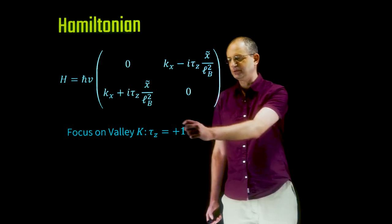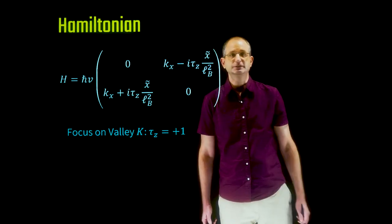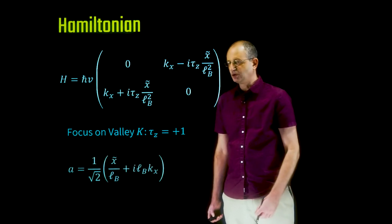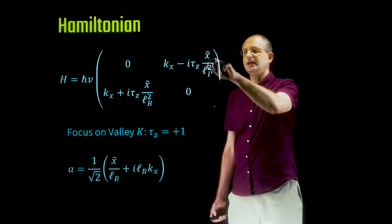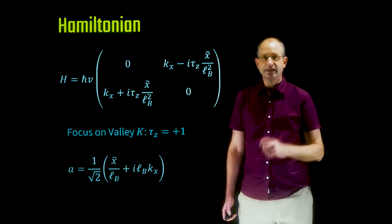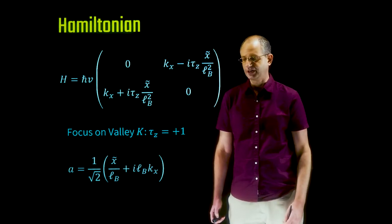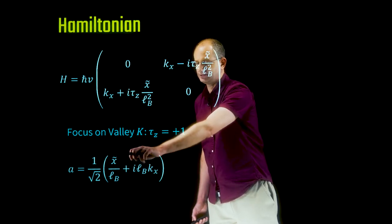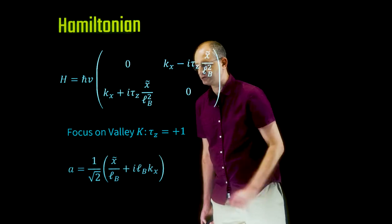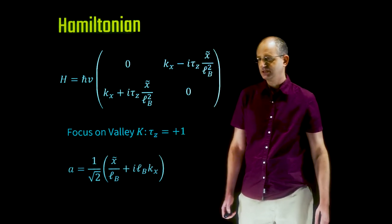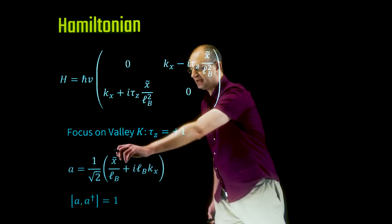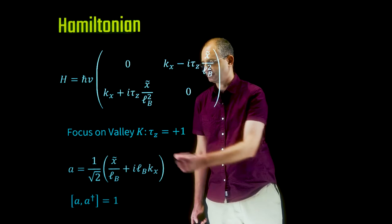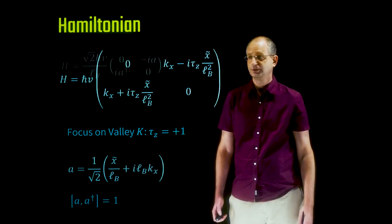We focus on one of the two valleys, fixing tau_z = +1, and will discuss the other valley later. We notice the combination k_x minus i·x̃, which reminds us of harmonic oscillator raising and lowering operators. We define the operator a = (x̃ + i·k_x) / (sqrt(2)·l_B) — made dimensionless — and a†, which satisfy the commutation relation [a, a†] = 1.